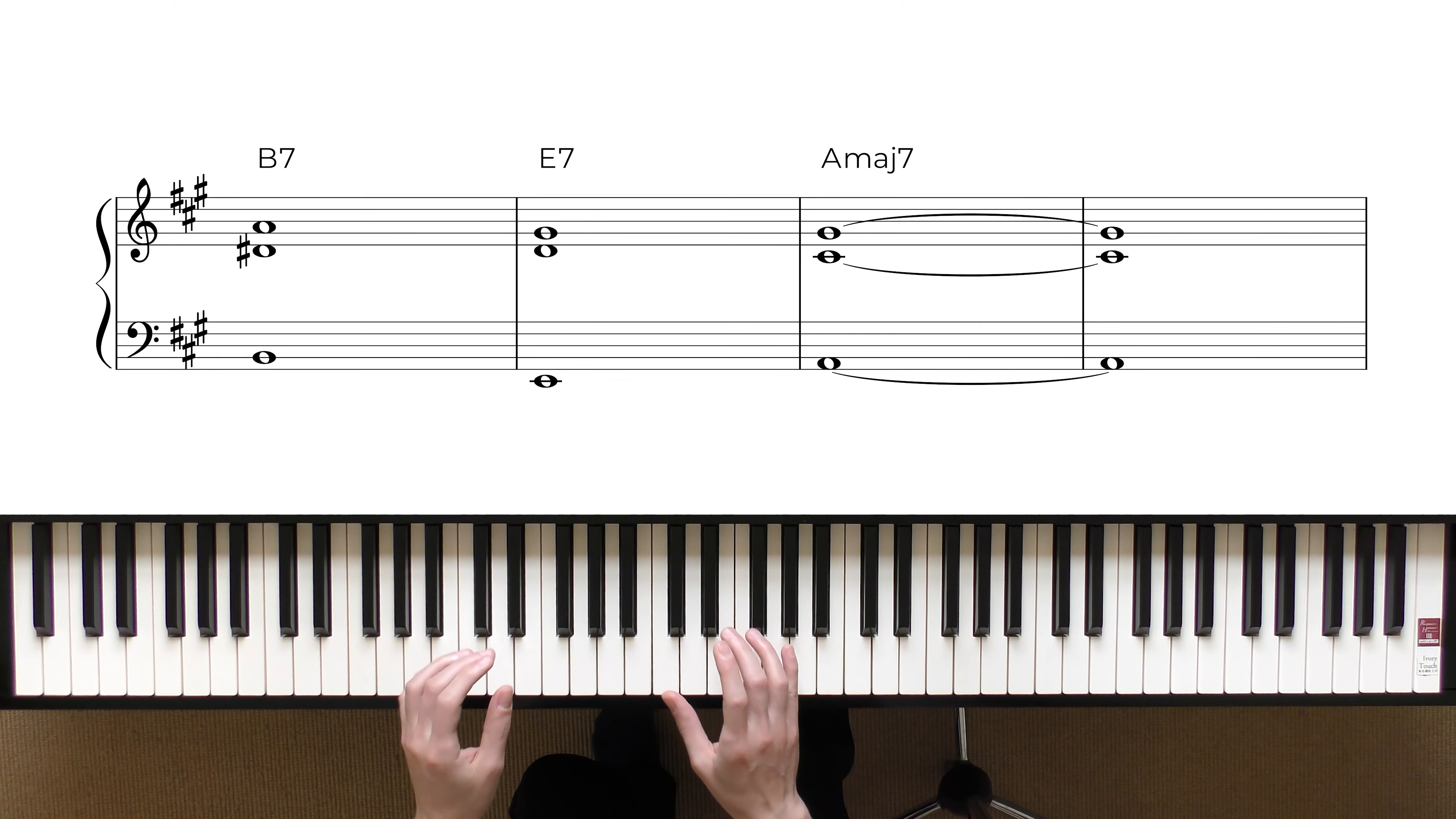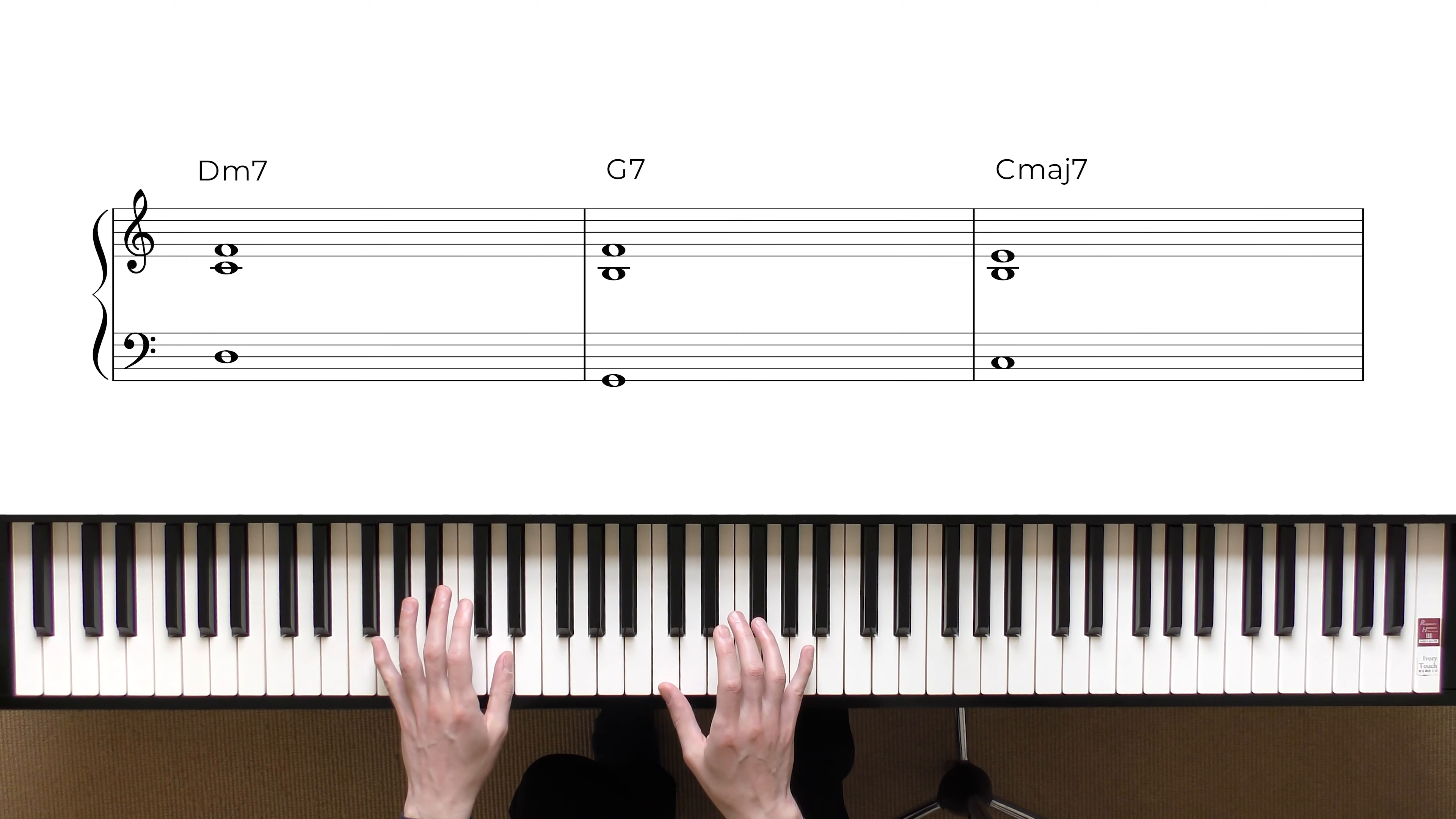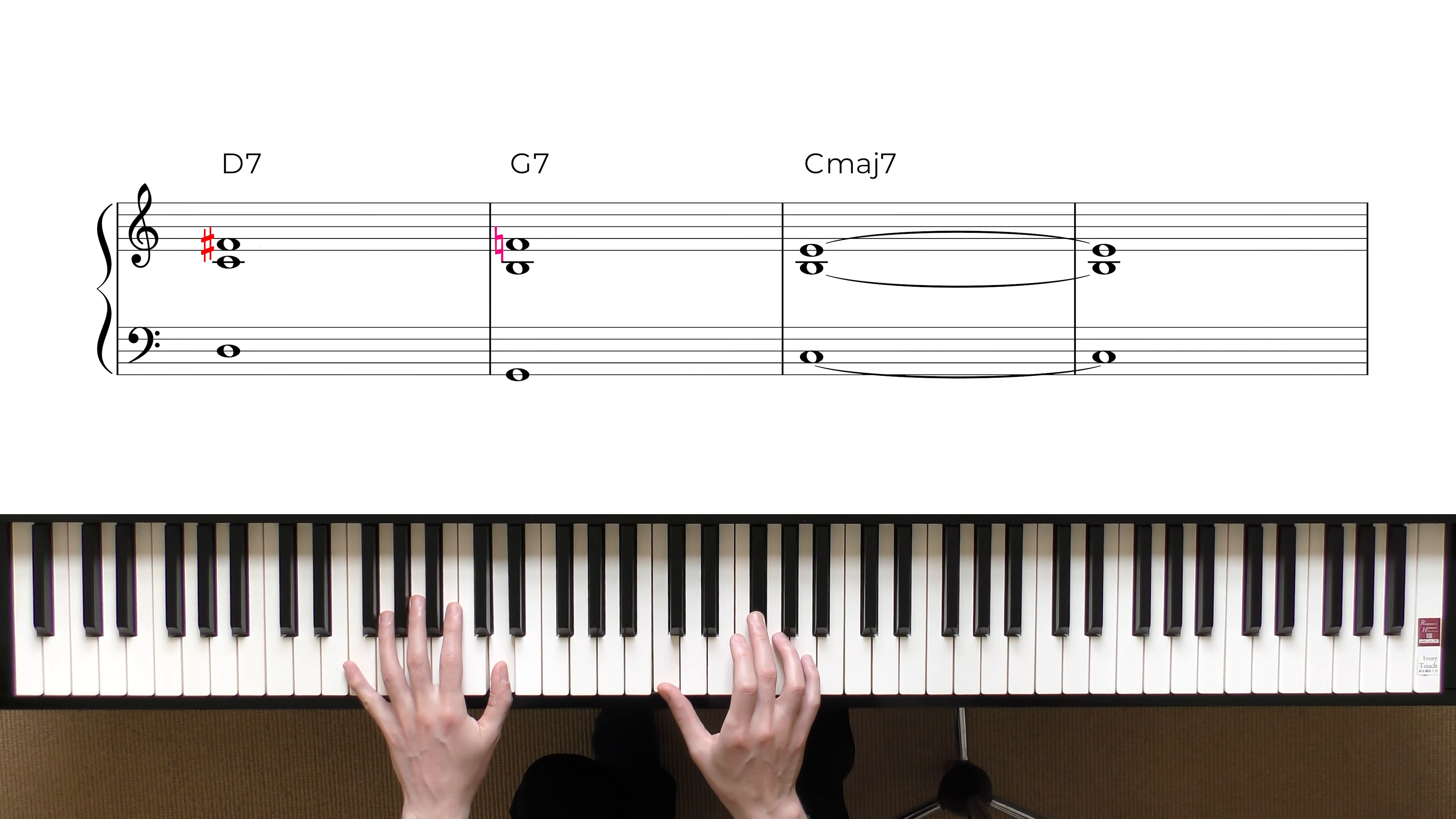So, if we see the other voicing, the voicing number 2 that we saw, we use the 3rd and the 7th, but in inversion. So, we need to raise the 3rd to make it dominant.